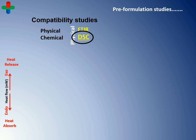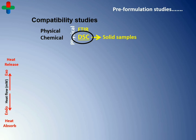Heating leads to the change of drug phases in one or more steps based on their nature. Solid samples absorb heat and melt, however liquid samples release heat and solidify. The amount of heat absorbed or released by any drug sample before melting or solidifying is known as the heat capacity of that particular sample. The release of heat is an exothermic process, while heat absorption is an endothermic process.